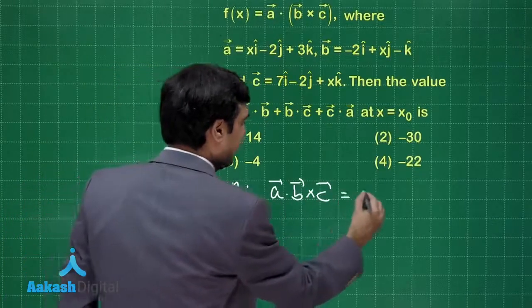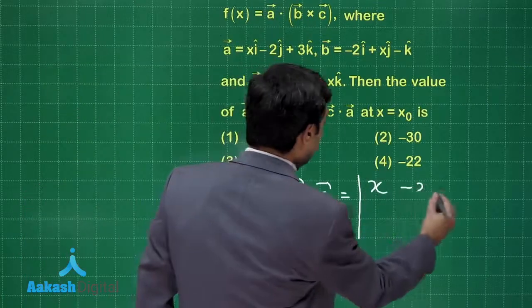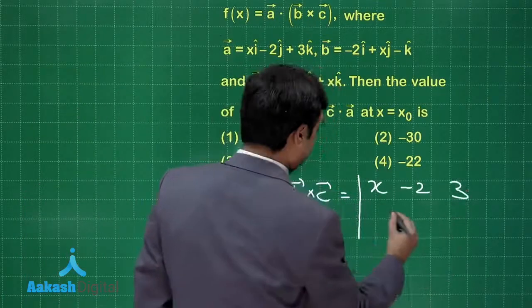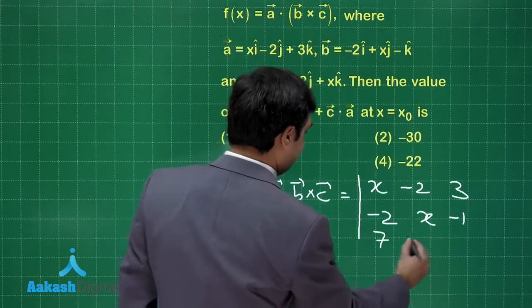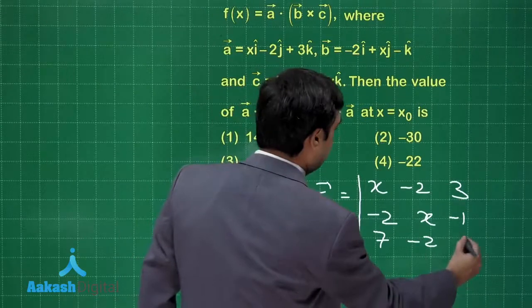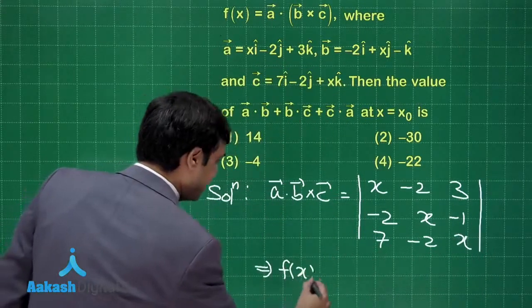So let's start it. A dot b cross c is equal to: this is my function actually. This is x minus 2, 3 minus 2x, minus 1, 7 minus 2x. This means f(x) is equal to...